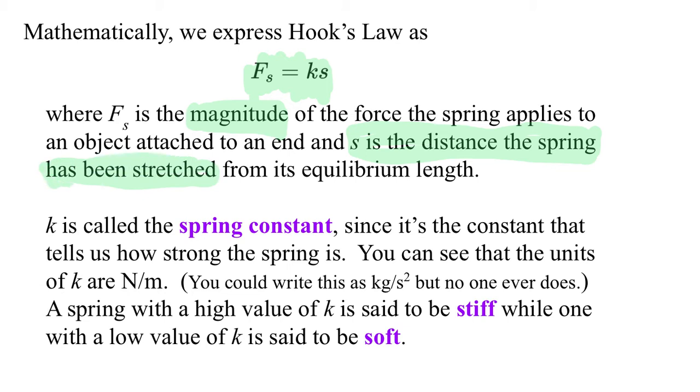And then K, this thing K, is called the spring constant, because it's the constant that tells us how strong the spring is. And yes, it's the usual physics way of choosing incredibly obvious names. The constant associated with the spring is called its spring constant.